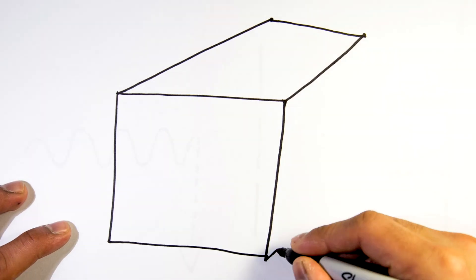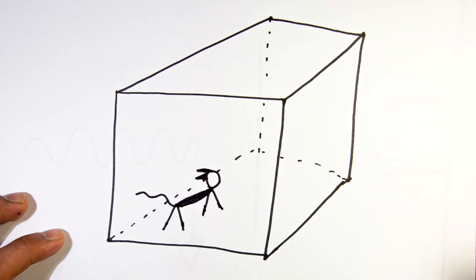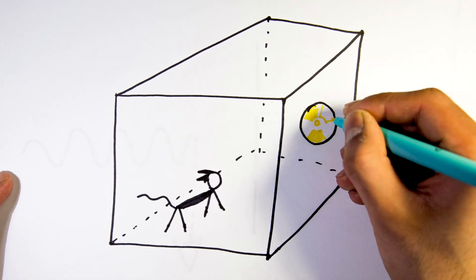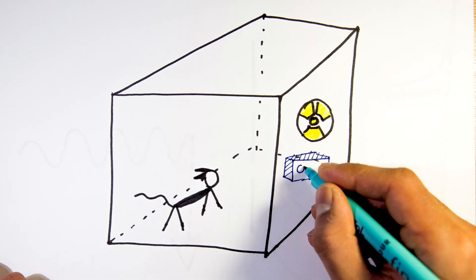To understand the Copenhagen interpretation, let's take a look at Schrödinger's famous thought experiment, Schrödinger's cat. Imagine we have a cat in a sealed box with some radioactive substance that has an equal probability of decaying and not decaying in some unit of time, let's say an hour.